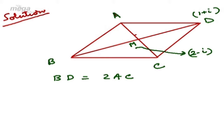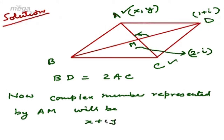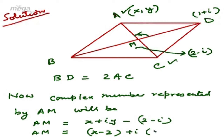We have to find the point A, which can be at this place or at this place. That means we have to rotate a complex vector MD in the direction of AM. The final position will be AM and the initial position will be DM. Suppose we assume the coordinates of A as (x, y). Then the complex number represented by AM will be (x - 2) + i(y + 1).